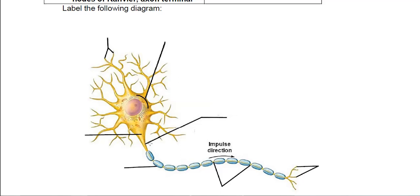Coming off of the cell body, we have all of these small appendages. These are the dendrites, which are going to receive signals from a different neuron. At the bottom of our cell body, where it starts to narrow a little bit, this is the axon hillock.